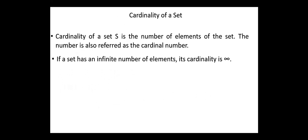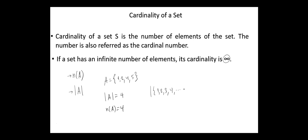Next, cardinality of a set. Cardinality of a set is the number of elements of the set, also referred to as the cardinal number. The cardinality of a set is denoted by n(A) or |A|. For example, if the set A = {1, 2, 4, 5}, then the cardinality of A equals 4, or we can write n(A) = 4. If a set has an infinite number of elements, its cardinality is infinity. For example, the cardinality of {1, 2, 3, 4, ...} is infinity. The cardinality of the empty set equals 0.